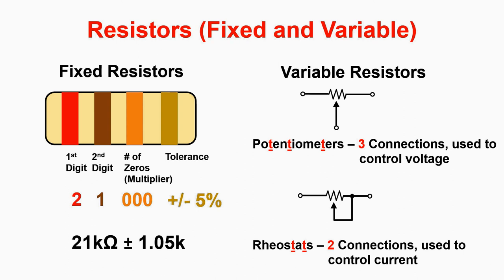Alright, now for two types of variable resistors. We talked about them in class today. Potentiometers and rheostats. Potentiometers have three T's and three terminals and control voltage. Rheostats have two T's, two terminals, and control current.